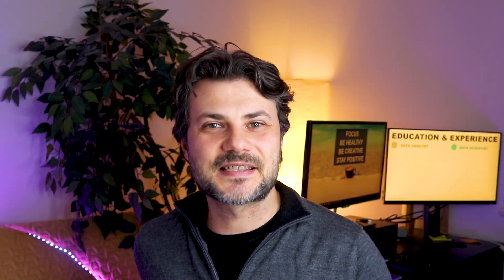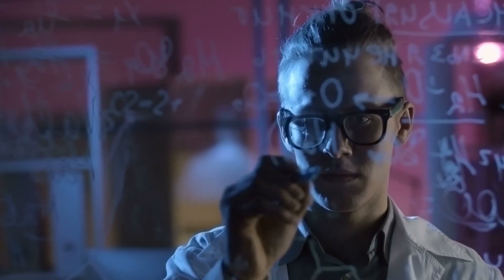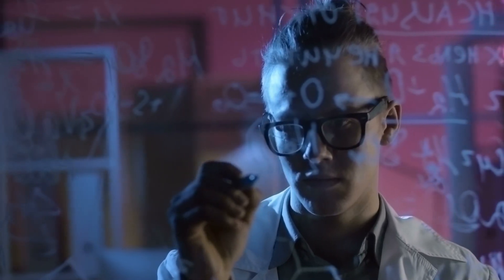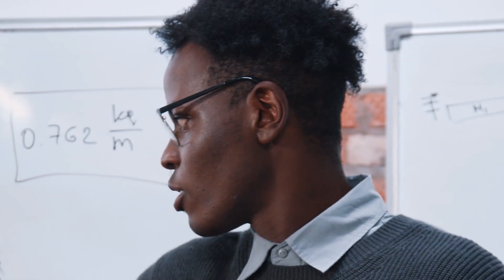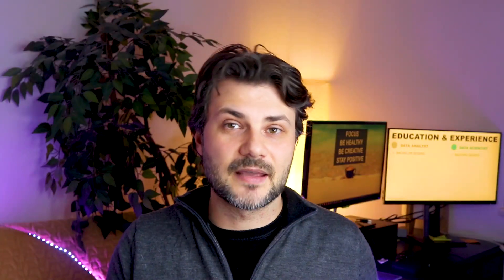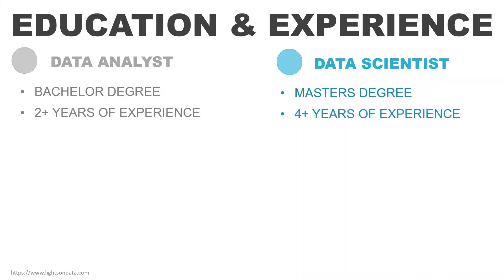Let's look at the education and experience for both roles. I looked at over 100 job descriptions and the requirements can vary greatly, but here are some common denominators. The requirements for a data analyst are a bachelor's degree at a minimum, desirably in a science field, and it's not uncommon to see a statistics or mathematics background preferred. For data scientists, a master's degree is required at a minimum — usually in mathematics, software engineering, machine learning, or computer programming — and some even ask for a PhD. As for years of experience, a data analyst could get by with two years of previous experience, and a data scientist with four or more.